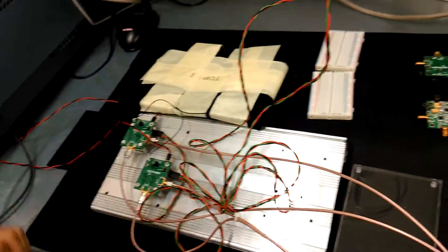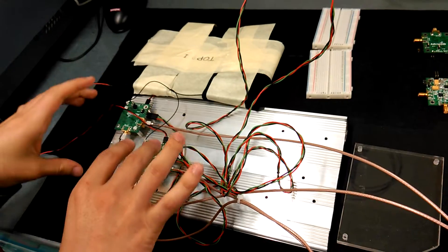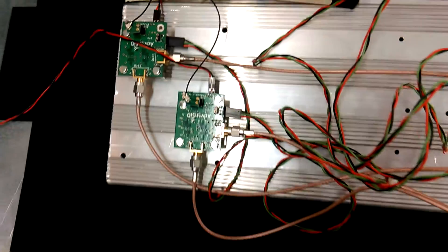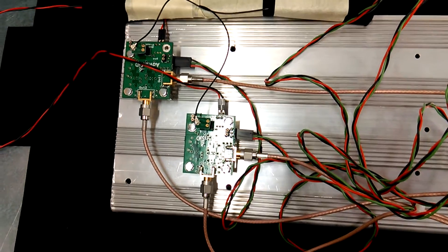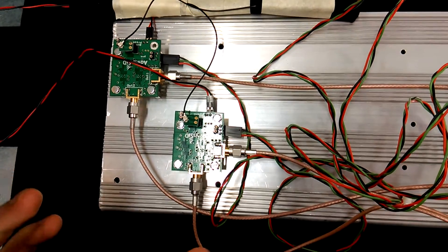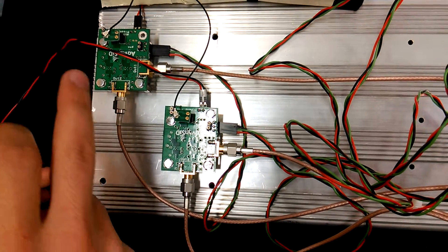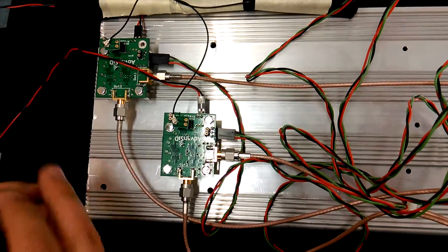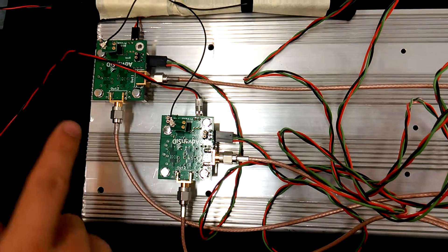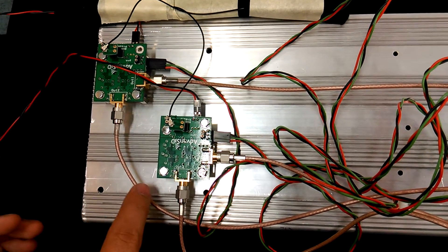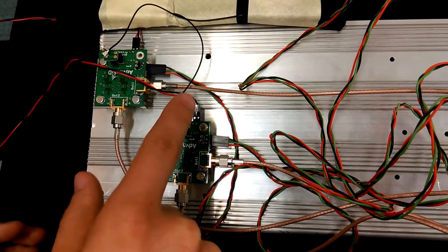In these boards we have two outputs for each channel so that we can study them separately. Basically, we have one output where the signal is non-amplified and another one where it's amplified by five.